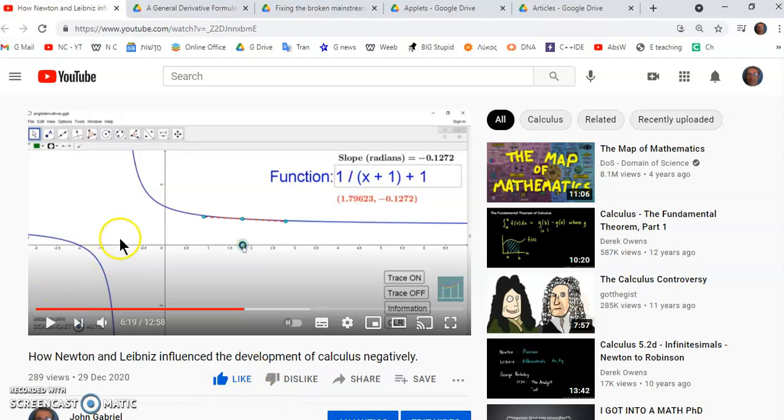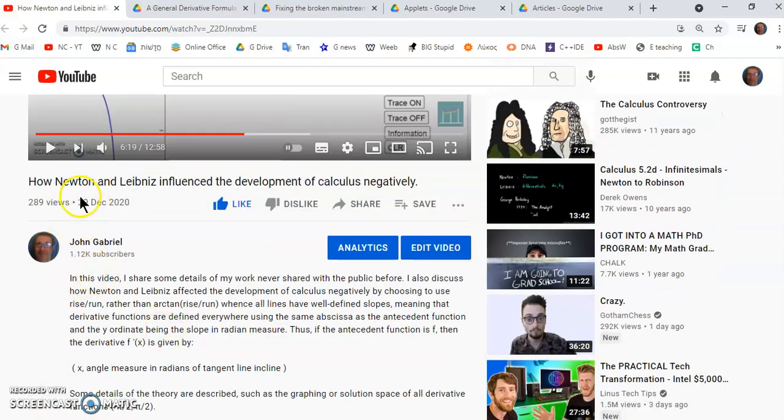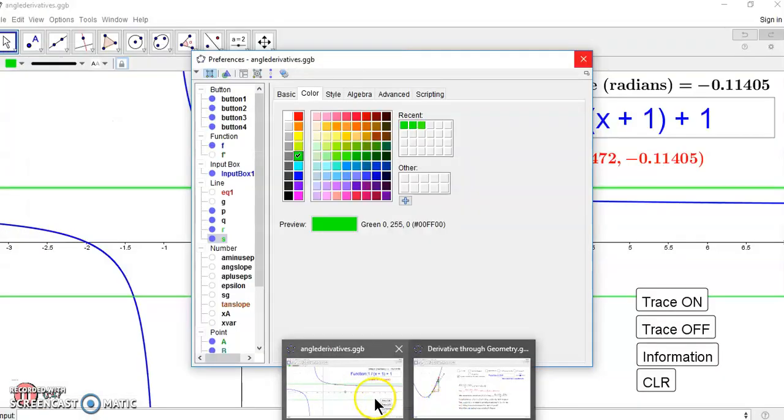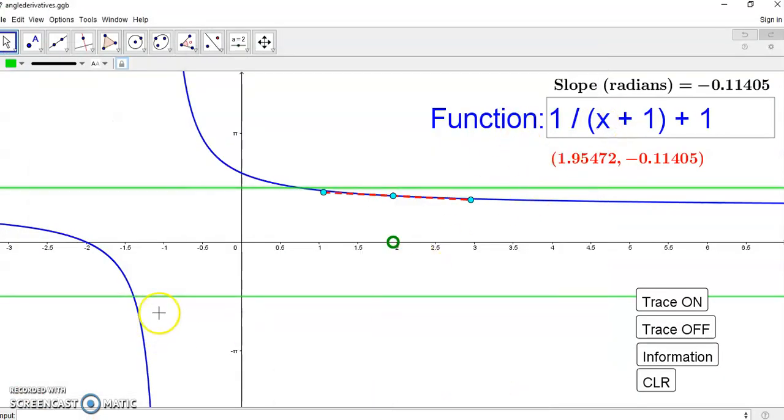Now you'll recall I showed you this video here, how Newton and Leibniz influenced the development of calculus negatively. In this video I explained to you that you can actually find a derivative function in terms of angles for any function and it will be defined everywhere as I showed you in that video.